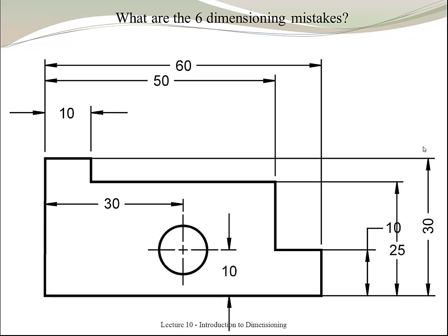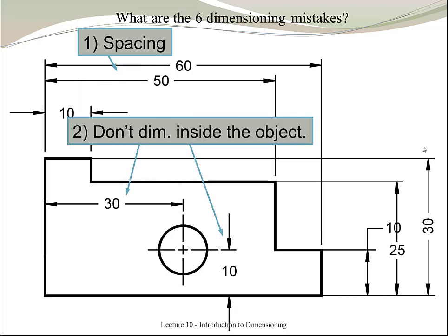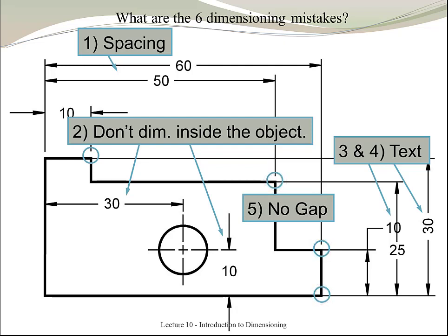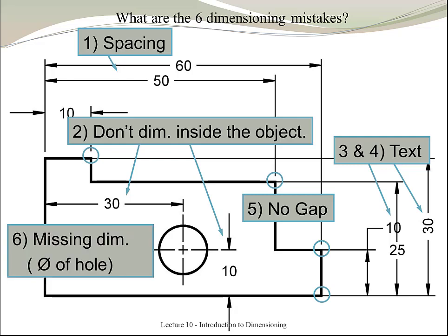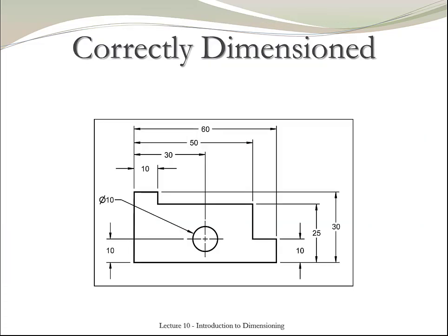Let's do an example. What are the six dimensioning mistakes in this drawing? Let's start with the spacing between these two dimensions. Notice that it is not equal as the one that we have in here. The second, we need to remove the dimensions that are inside of an object. Notice then that the text is intercepting this dimension over here. And also notice that the orientation of the text is not the same. We then see that there is no gap between the extension lines and the objects. And then notice that we do not have a dimension for the diameter. This will be the ending result and the correct dimension for that particular drawing.